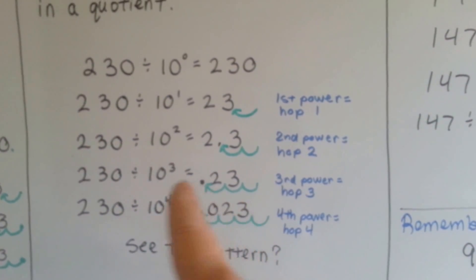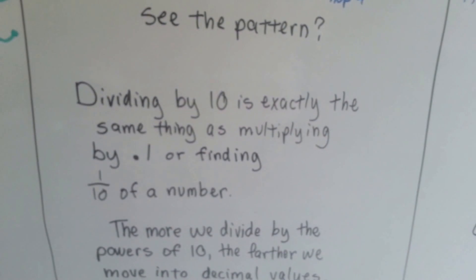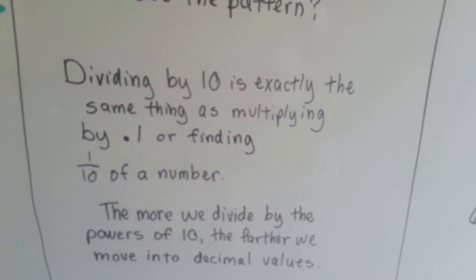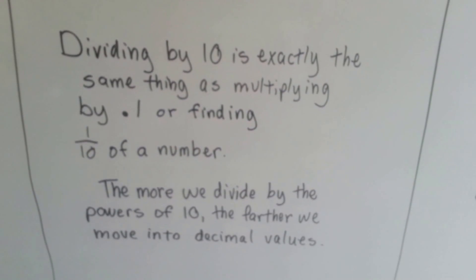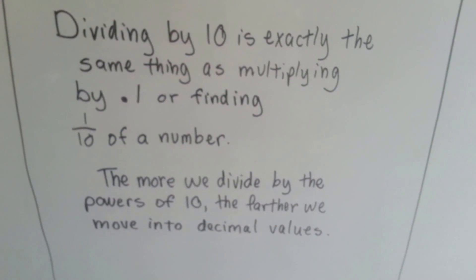Power of four, jump four. Power of three, jump three. Dividing by 10 is exactly the same thing as multiplying by 1 tenth, or finding the tenth of a number. The more we divide by the powers of 10, the further we move into decimal values.